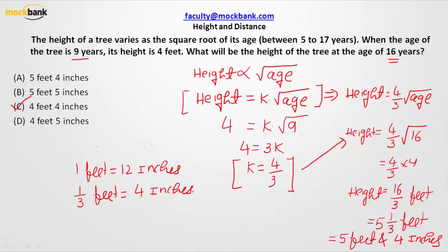Height of the tree will always be 4 over 3 times square root of the age of the tree. And that is how when we put age to be 16 years, we found out that the height of the tree is 16 over 3 feet. Now we converted that 1 over 3 feet into inches.